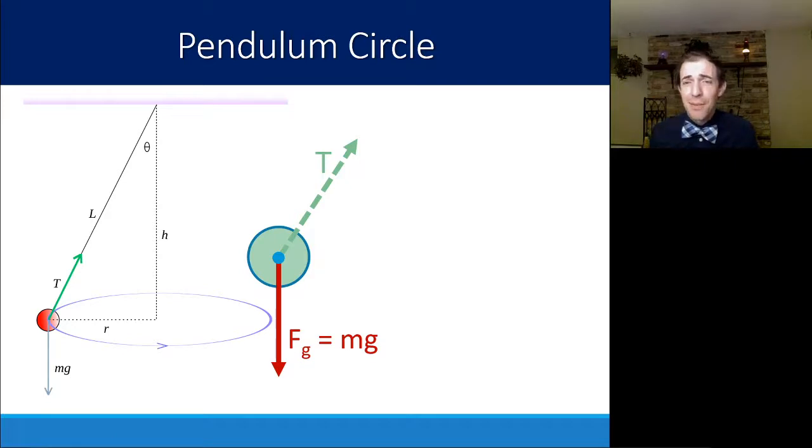Anytime we have a force at an angle like this, it's really helpful for us to find the components of that force, the components that are either parallel or perpendicular to the other forces that are acting. Part of this tension is in the y direction and part is in the x direction. Overall though, we have a centripetal force that's pointing towards the center of the circle because this object isn't moving up or down. The only force must be moving it inward, so Fc is going to be really important.